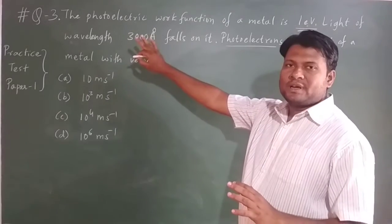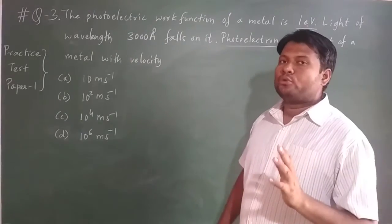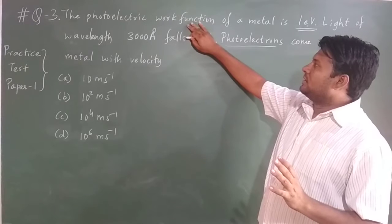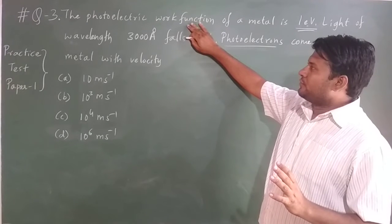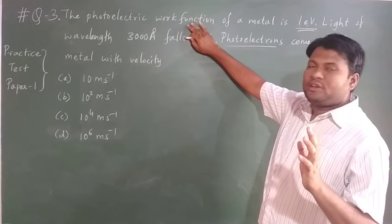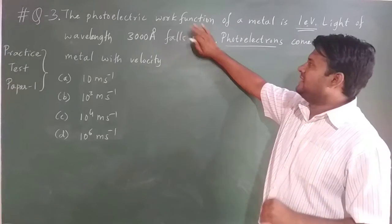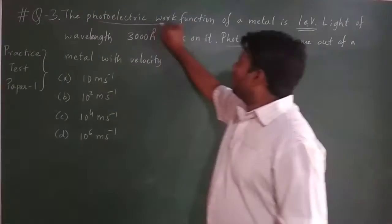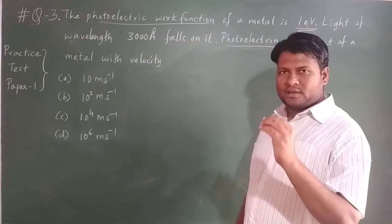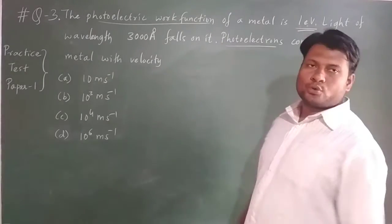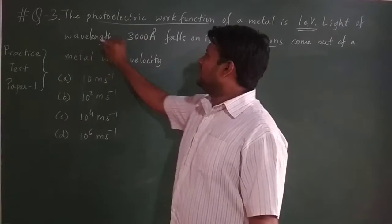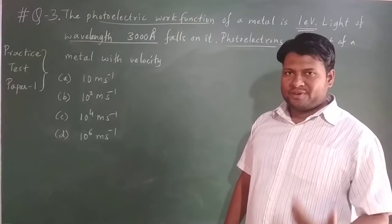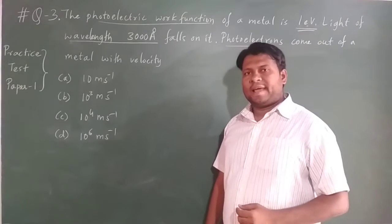If you read this question very thoroughly, you will come to know that they are asking the photoelectrons' velocity by giving two known quantities: one is the photoelectric work function, which is 1 electron volt, and the other is the light wave's wavelength, given as 3000 angstrom.